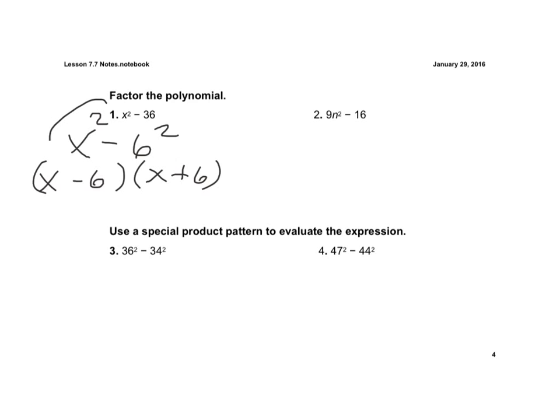Again, this isn't maybe a necessary step, but it does show that we have a term squared followed by another term squared. So in this case, 9n squared, well, that's the perfect square of 3n all to the second.